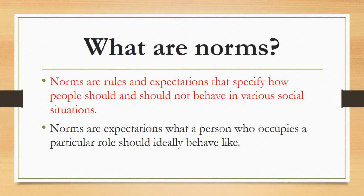First of all, what are norms? Norms are rules and expectations that specify how people should and should not behave in various social situations. There are three things in this definition: one is rules, second one is expectations, and third one is social situations.